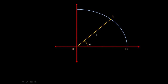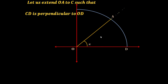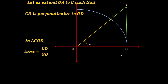If we extend AO to C such that CD is perpendicular to OD, it forms a right angle triangle. We can apply the trigonometric ratio tan(X), so tan(X) equals CD by OD — opposite by base — and OD is 1 unit because it is the radius of the unit circle. Therefore CD equals tan(X).